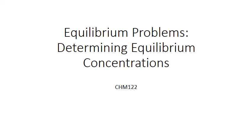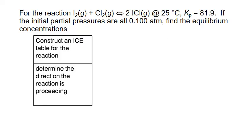Our final type of equilibrium problem involves calculating equilibrium concentrations given initial concentrations for a reaction and an equilibrium constant value. For the following reaction, one iodine molecule reacts with one chlorine to produce two iodine monochlorides. We're given the equilibrium constant K sub P at 25 degrees Celsius of 81.9, and initial partial pressures of all reactants and products of 0.100 atmospheres. We're asked to find the equilibrium concentrations.